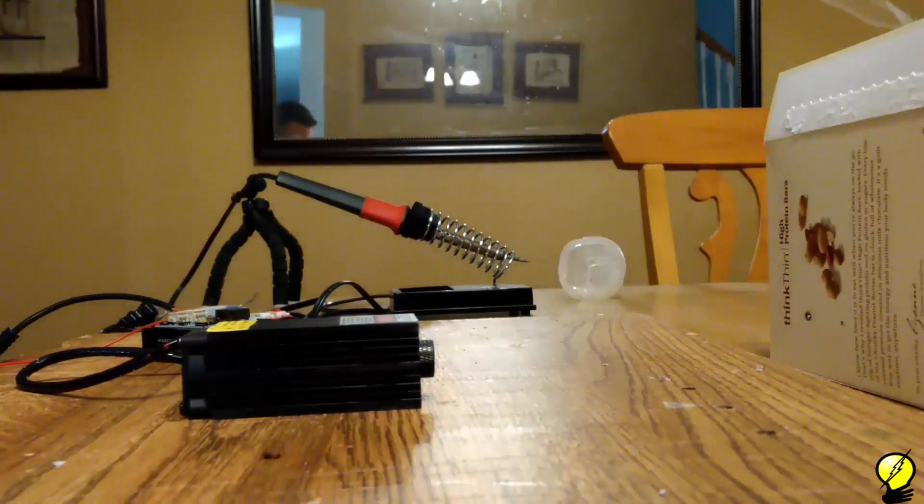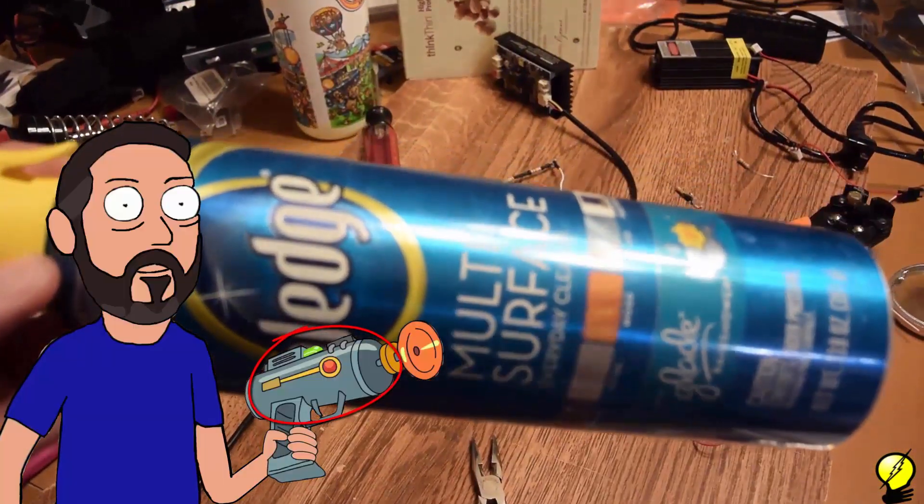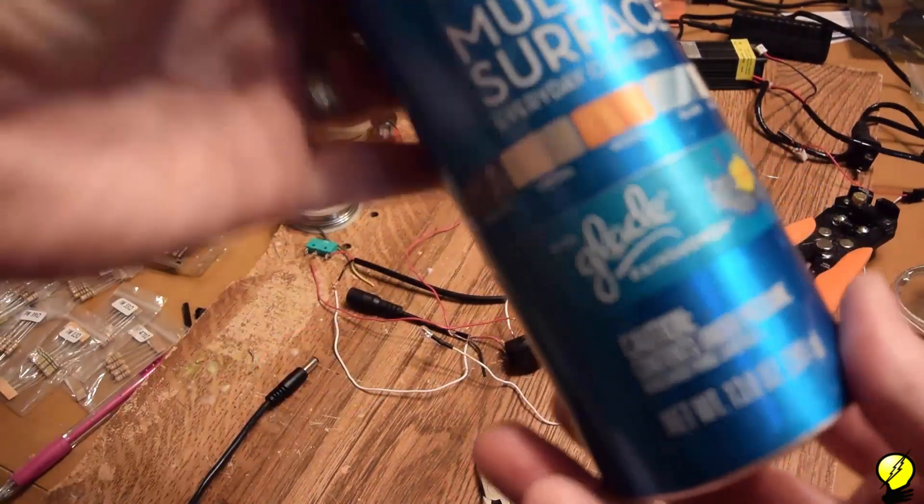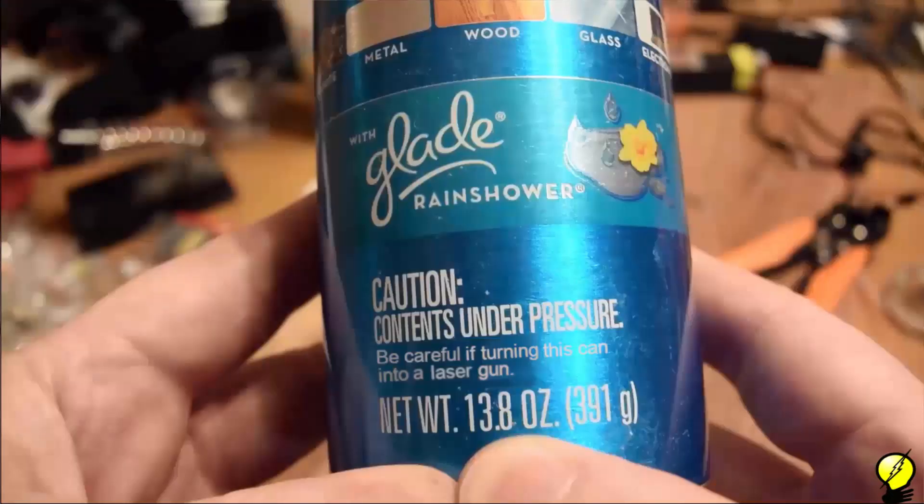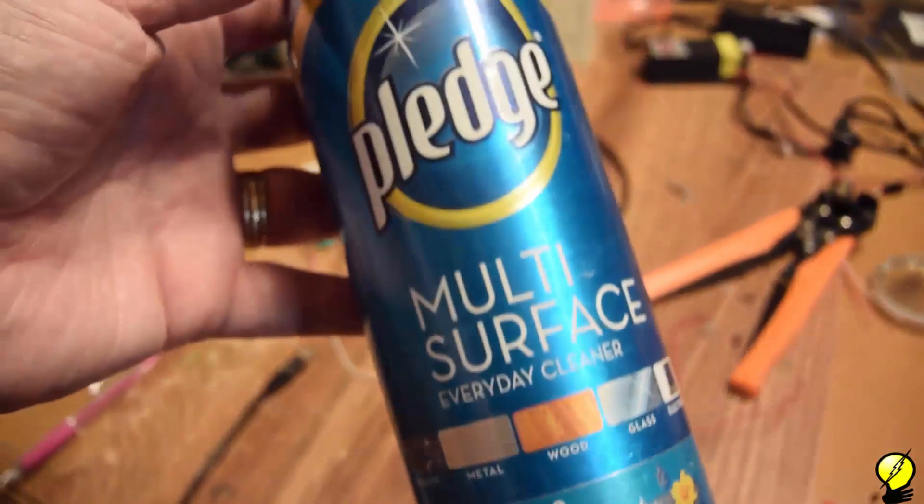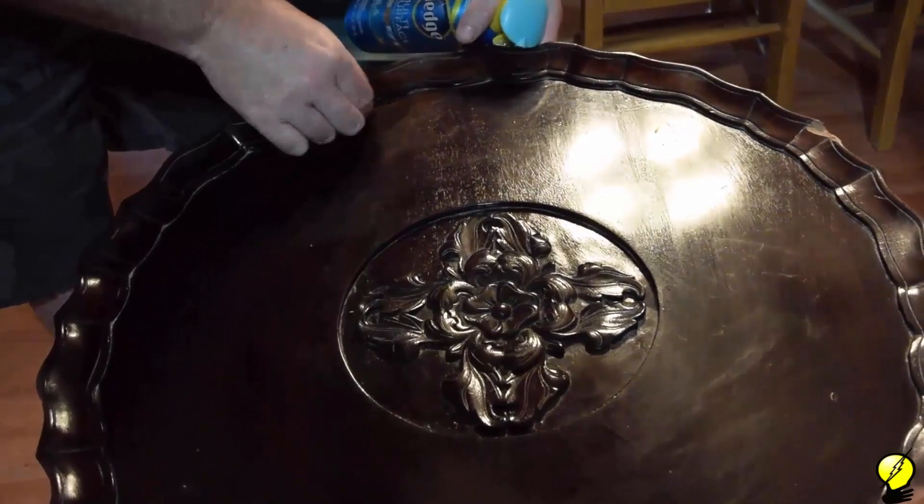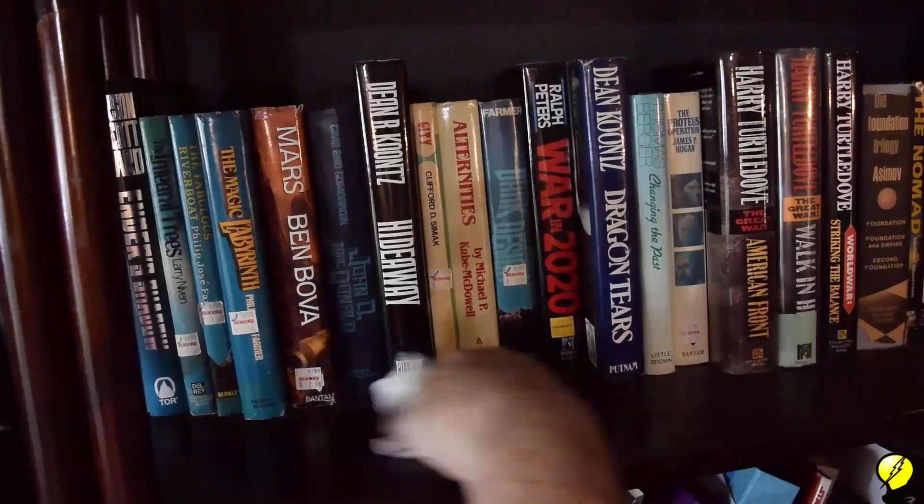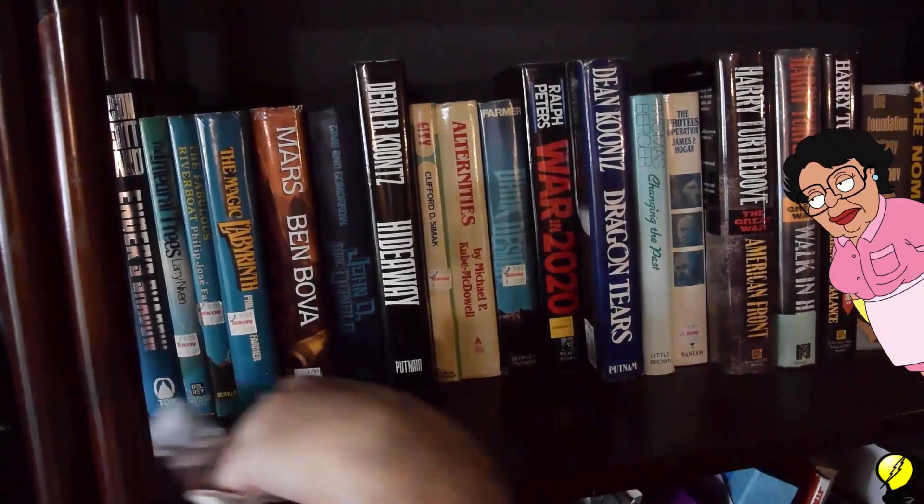Next we'll want something for the body of the gun. I'm using this canister of pledge. It comes in various sizes. You'll want this size for this project. While you're waiting on your laser to arrive be sure to use up the full can because we're going to be cutting it open here in a few minutes. We need more lemon pledge.